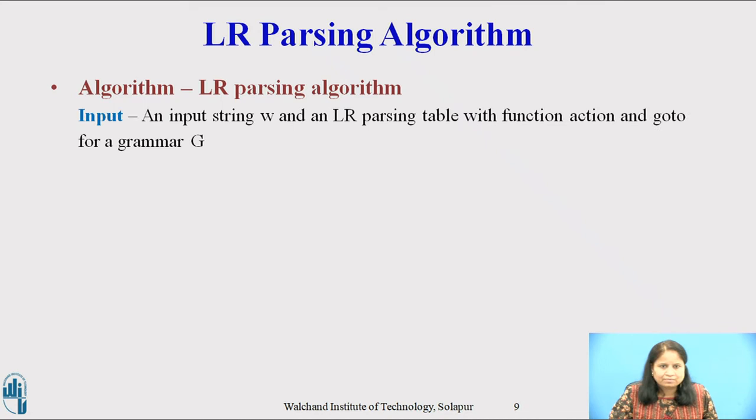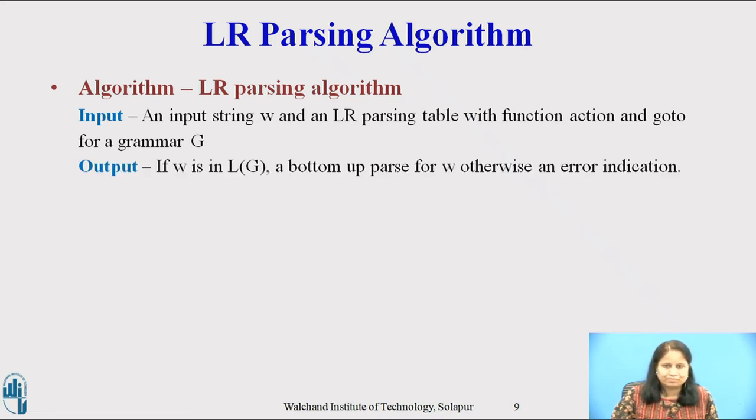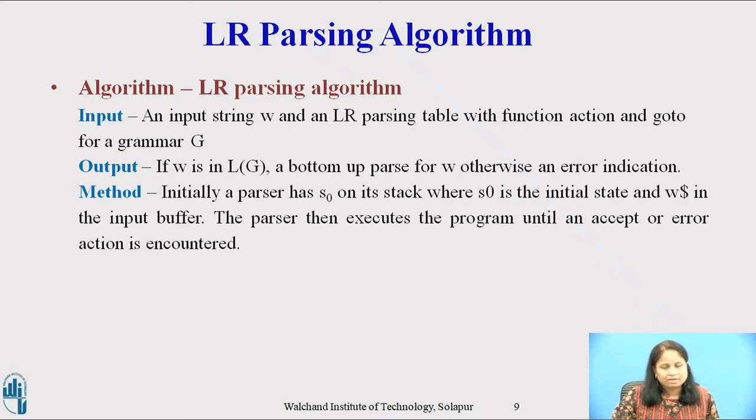Algorithm LR parsing. Input: an input string W and LR parsing table with functions action and goto for grammar G. Output: if W is in the language of grammar G, a bottom-up parse for W, otherwise an error indication. Method: initially a parser has S0 on its stack, where S0 is the initial state and W dollar is in the input buffer. The parser then executes the program until an accept or error action is encountered.